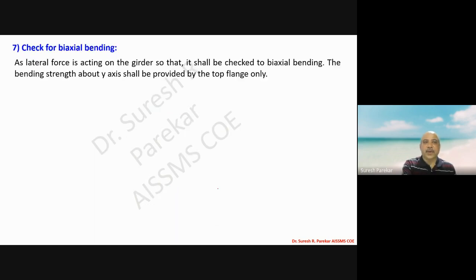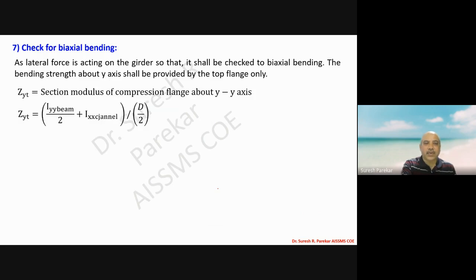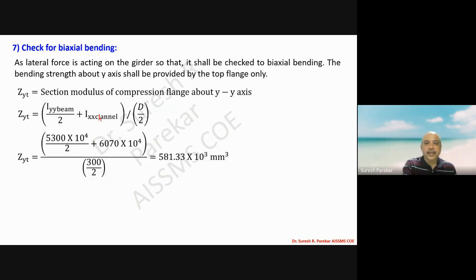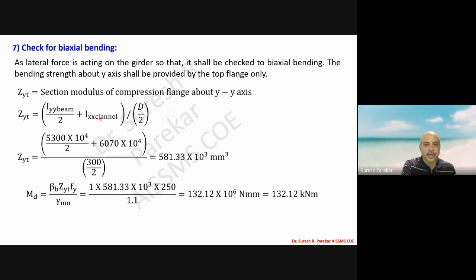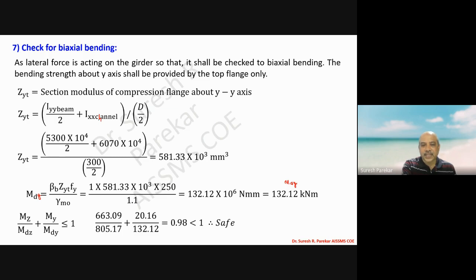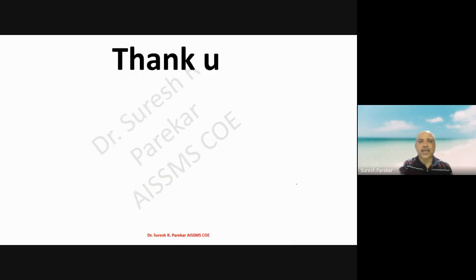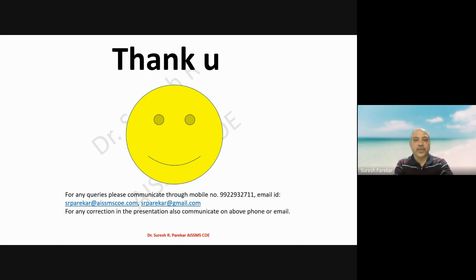For biaxial bending check, we consider Iyy of beam halved plus Ixx of channel section to find Zyt, which comes to 581.33 into 10 cubed mm cubed. The design moment Mdy equals 132.18 kilonewton meter. The biaxial bending interaction check gives 0.98, which is less than 1.0, and therefore the section is satisfactory. This concludes the gantry girder problem which we also need to solve as term work.